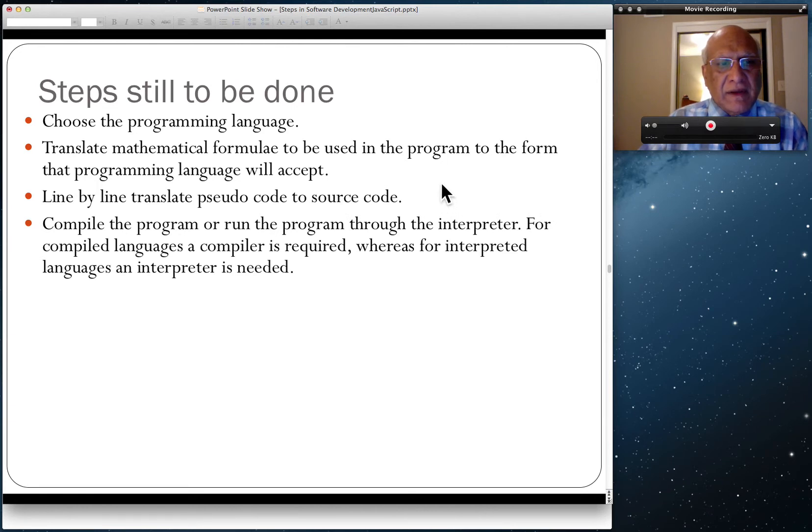If you're using a compiler, compile the program or run the program through it. If you're using an interpreter, run the program through the interpreter. For compiled languages, a compiler is required; for interpreted languages, an interpreter is required. Then fix any compiler or interpretation errors.